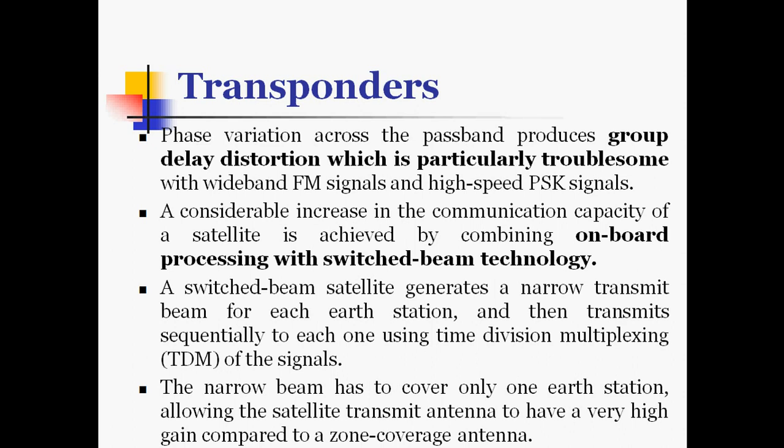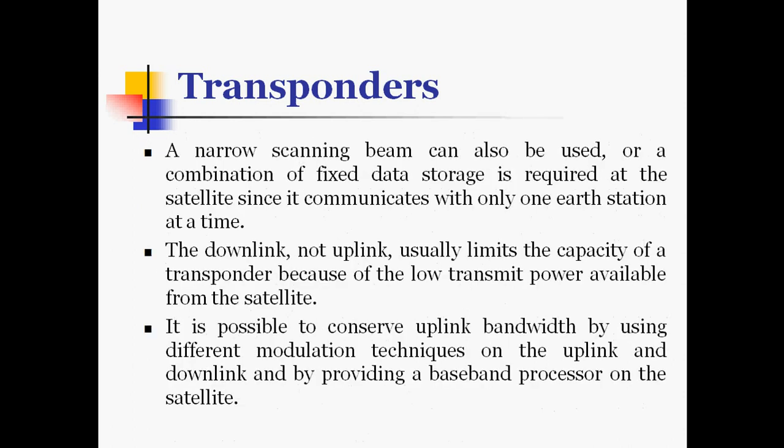A considerable increase in communication capacity is achieved by combining onboard processing with switched beam technology. A switched beam satellite generates a narrow transmit beam for each earth station and transmits sequentially to each one using time division multiple access. The narrow beam covers only one earth station, allowing very high antenna gain compared to a zone coverage antenna. Data storage is required at the satellite since it communicates with only one earth station at a time. The downlink usually limits the capacity of a transponder because of low transmit power available from the satellite.